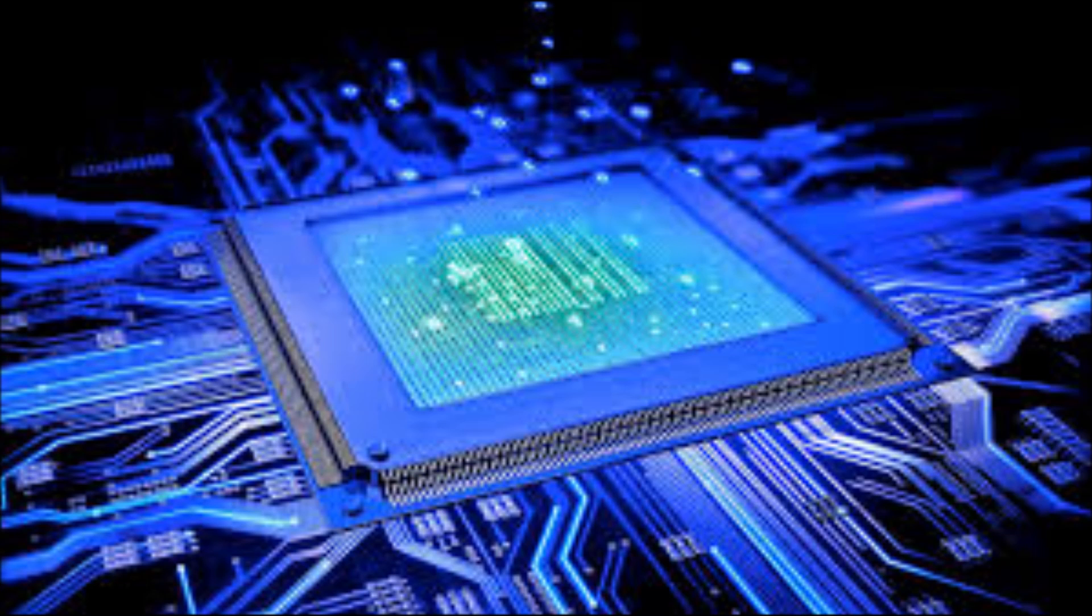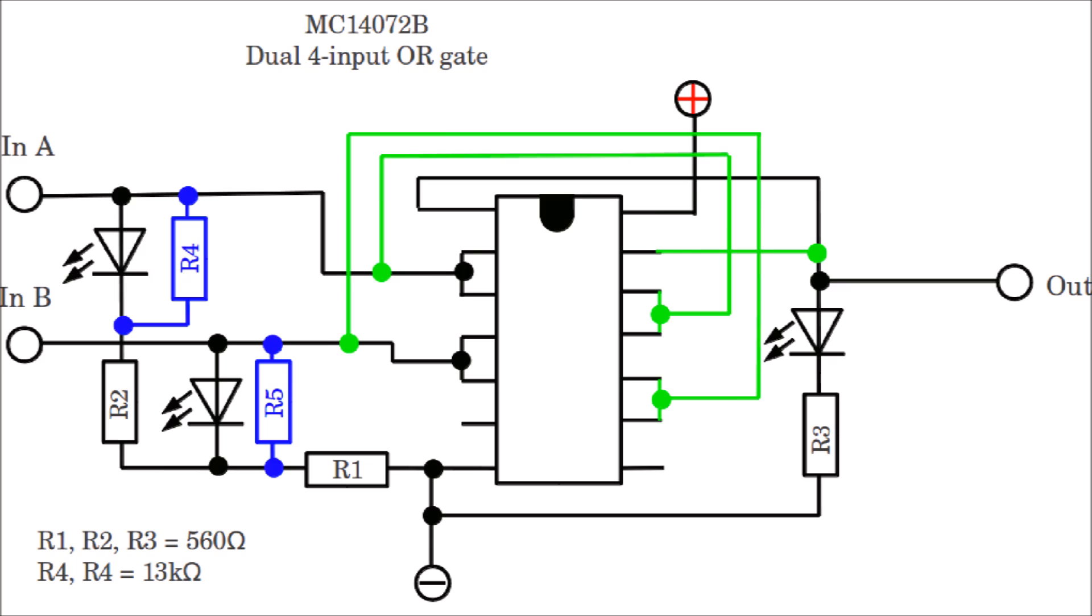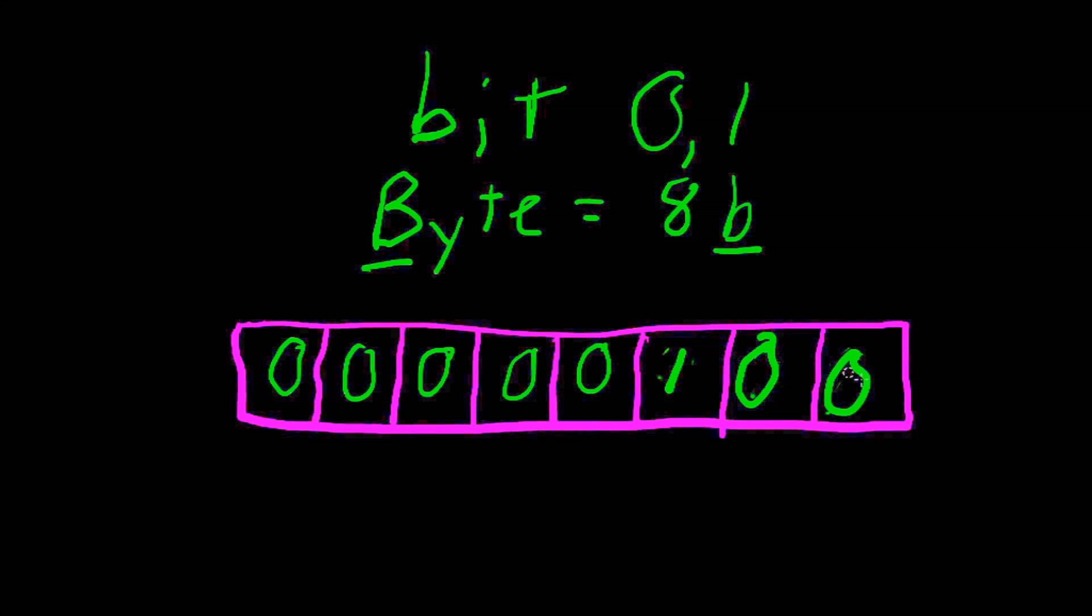Computers can determine if a bit will be a one or a zero using logic gates. Eight bits make something we call a byte, and bytes are important because that's how we can store letters and other characters.